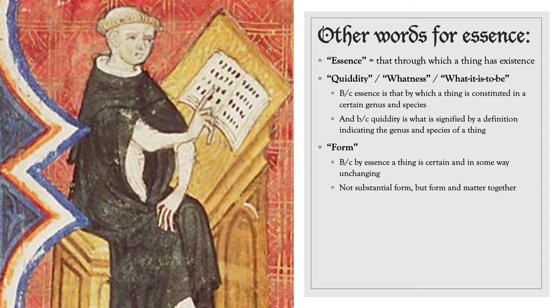Here, when St. Thomas says that 'form' means the same thing as essence, he's not talking about substantial form alone, but form and matter taken together, or the substantial form of an immaterial substance — that is, a substance with no matter. In material substances, the substantial form is not the essence, as we'll see. Nevertheless, form can sometimes signify the compound of both form and matter. In that case, form means the same thing as essence.